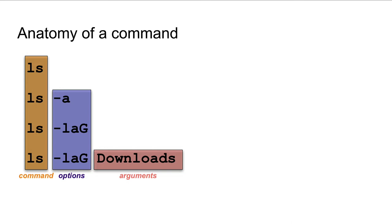Before we do that, let's talk about the anatomy of a command. When providing a command to command line software, spaces are very important as they delineate different components. The most fundamental unit is the command itself — in this case, `ls`, which means list directory contents. The command can be provided on its own, or you can provide one or more options that change its behavior. You can also provide arguments — something the command is operating on. For example, `ls -lag downloads` will show the contents of the Downloads directory rather than the current folder.